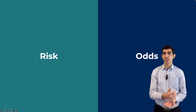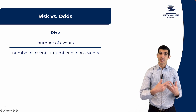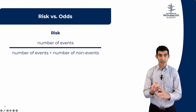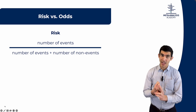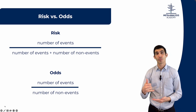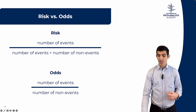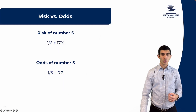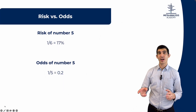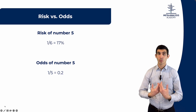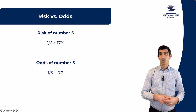To understand odds, you need to first understand what an odds is. Risk is the number of events divided by the patients who could have had the event — those who had it plus those who were at risk but did not have it. Odds is different: odds is the number of events divided by the number of patients who do not have the event. When you throw a dice, the risk of finding number five is one out of six — out of all six options, only one is number five — so the risk is 17%, or one in six.